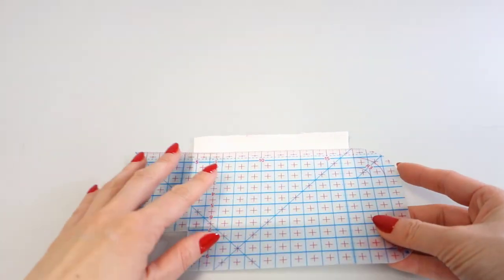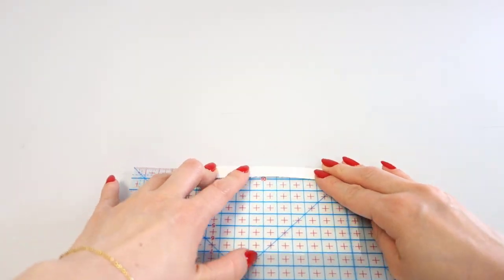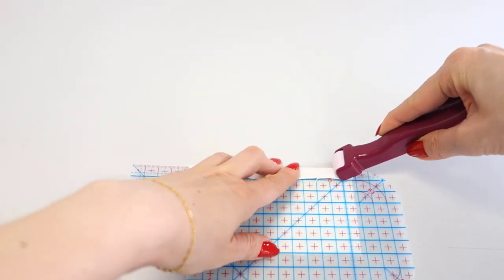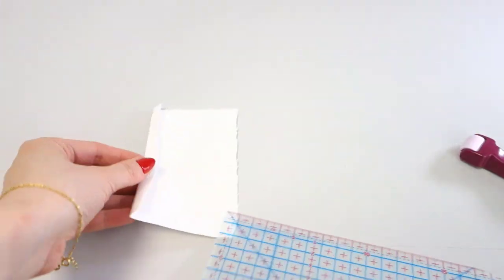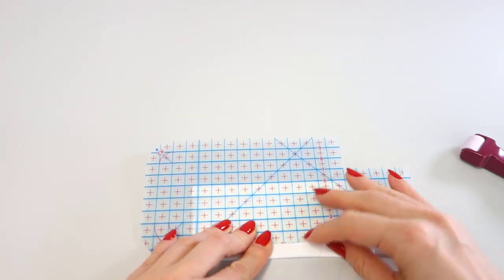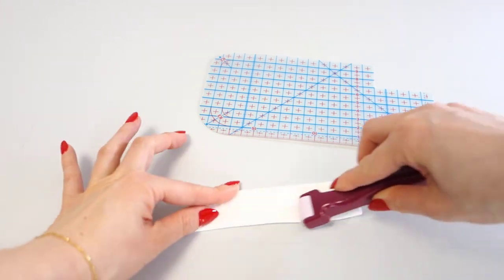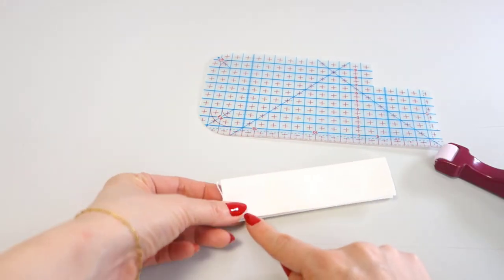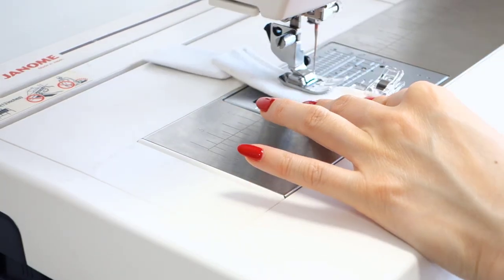Now, let's make the side tab. Take a fabric for the side tab and fold it at 1 cm from the top edge and press it. Do the same thing for the bottom edge as well. Fold it in half and press it. Sew one end of the fabric.